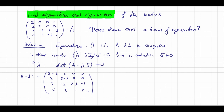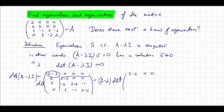There are different methods to calculate this determinant. For example, we can take a row expansion and see that since there is only one non-zero entry in the first row, this determinant will be equal to (2 minus lambda) times the determinant of a 3 by 3 matrix, which is: first row 2 minus lambda, 0, 0; second row minus 1, 2 minus lambda, minus 1; third row 1, minus 1, 2 minus lambda.